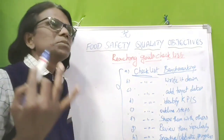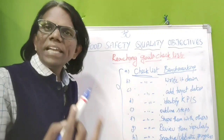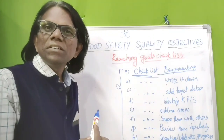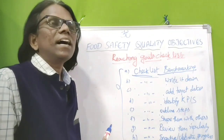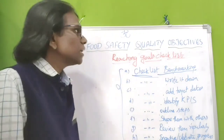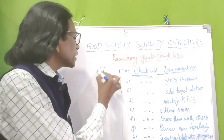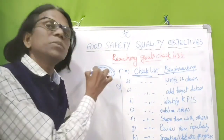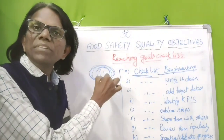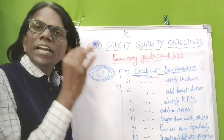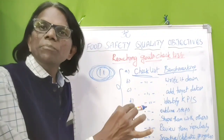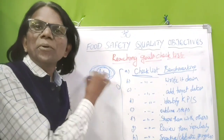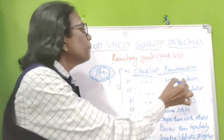For benchmarking, if your goal is to reduce customer complaints by 80% from the previous year, you collect data from the previous year. For example, if you received 11 complaints last year, that becomes your benchmark. This year's target is to reduce complaints by 80-85%, meaning complaints should not exceed two or more.